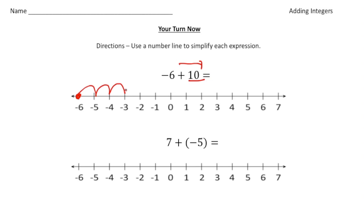One, two, three, four, five, six, seven, eight, nine, and 10. So we end up at 4. So negative 6 plus 10 gives you 4.